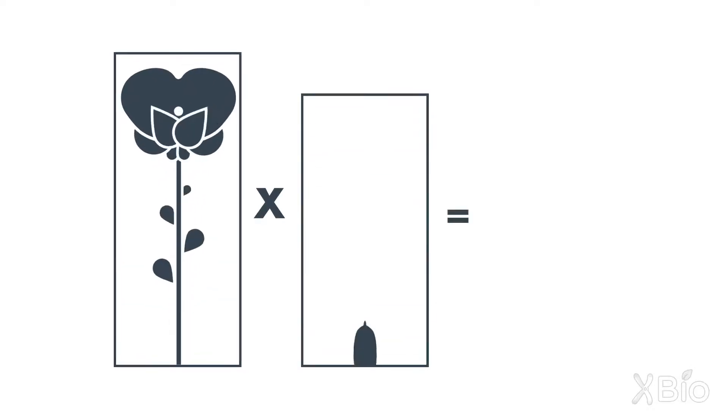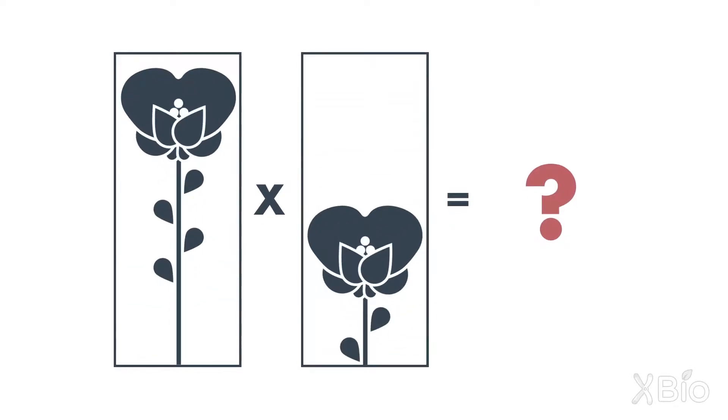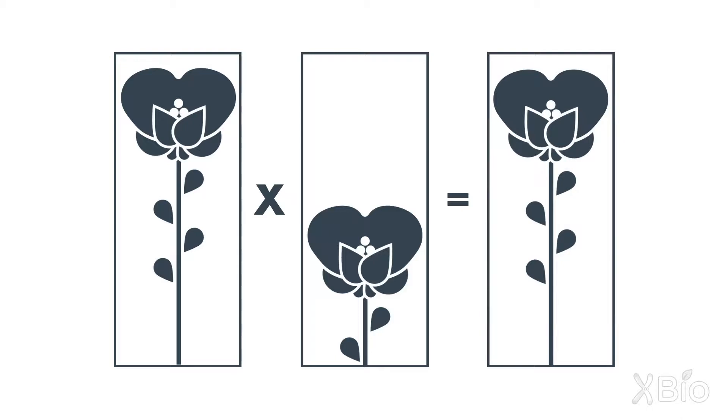That is not what Mendel observed. He observed, instead, that all of the plants in the hybrid cross were actually tall. And that told him something very important, which is that the tall character prevailed, and the short character, wherever that came from, had disappeared completely.